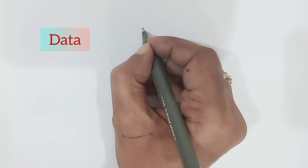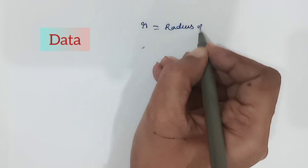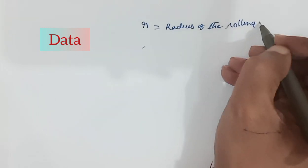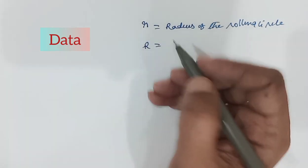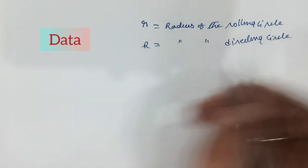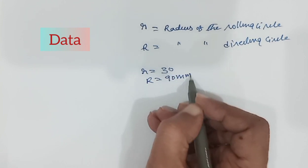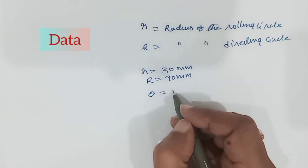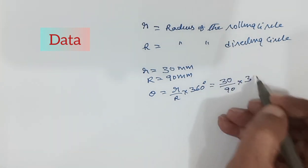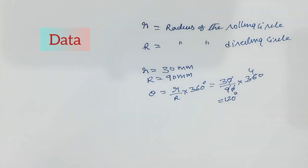Here the given data is: small r is the radius of the rolling circle, and capital R is the radius of the directing circle. Small r equals 30 mm, capital R equals 90 mm. Theta equals (r / R) × 360 degrees, which equals (30 / 90) × 360, which equals 120 degrees. That is, the angle subtended by the arc is 120 degrees.